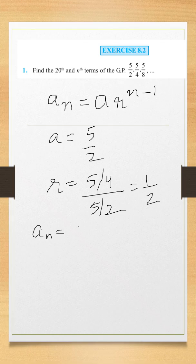What happens here? We will do value put. a is 5 by 2, r is 1 by 2 raised to the power n minus 1.